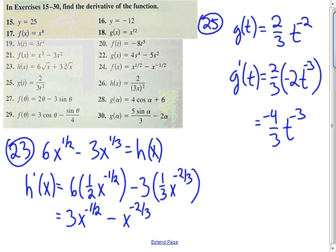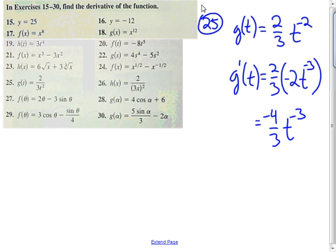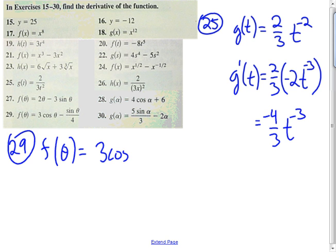And finally, number 29. We have f of theta is equal to three cosine theta minus, and let me just rewrite that as one-fourth sine of theta.